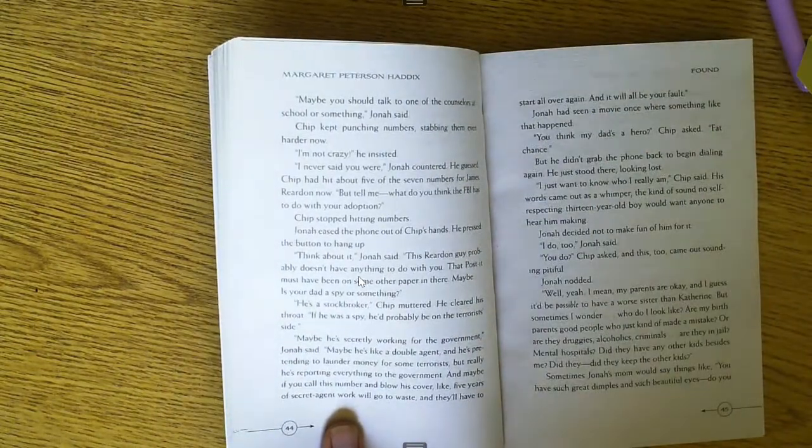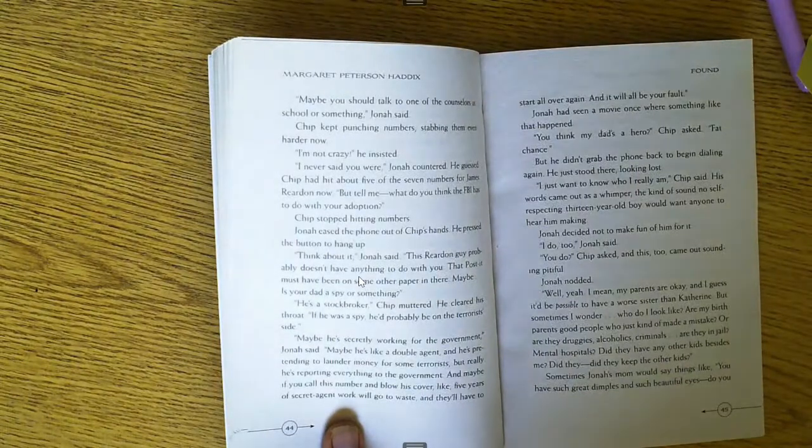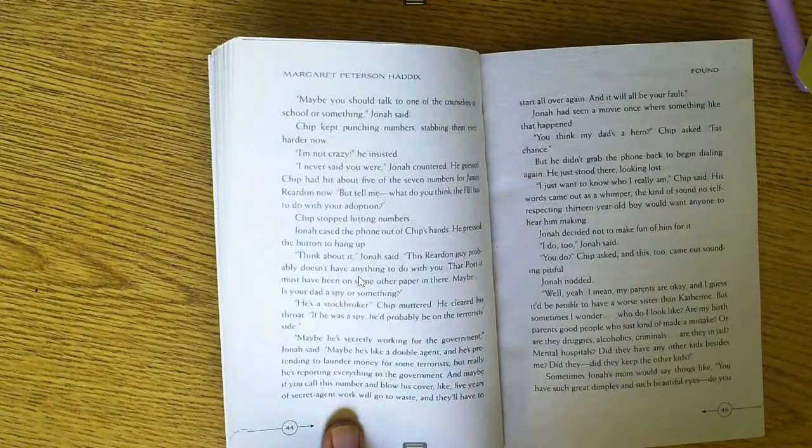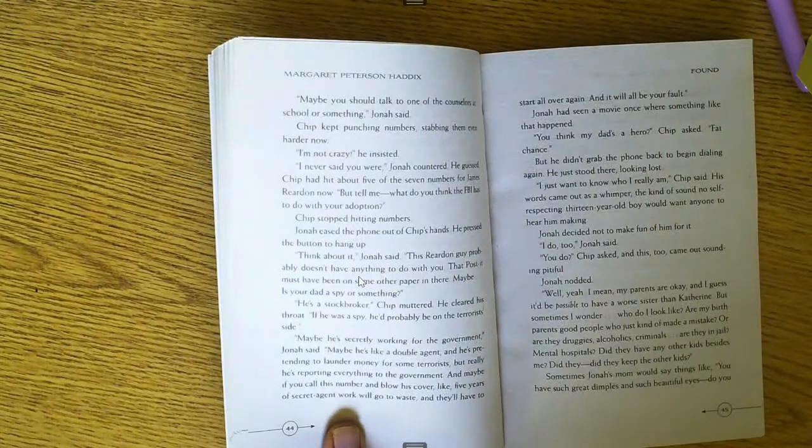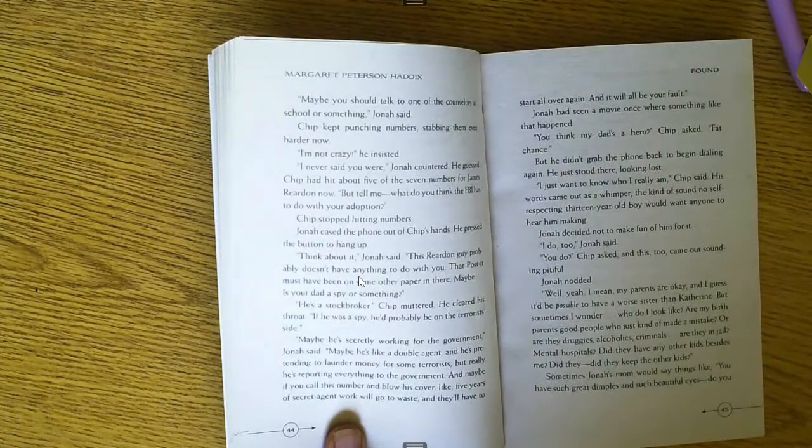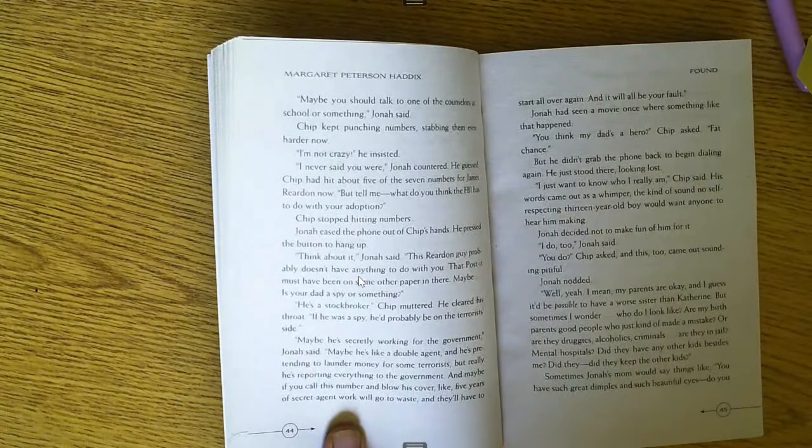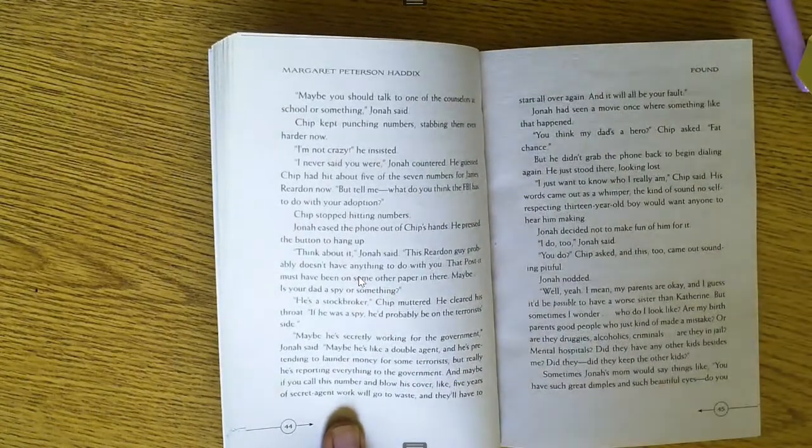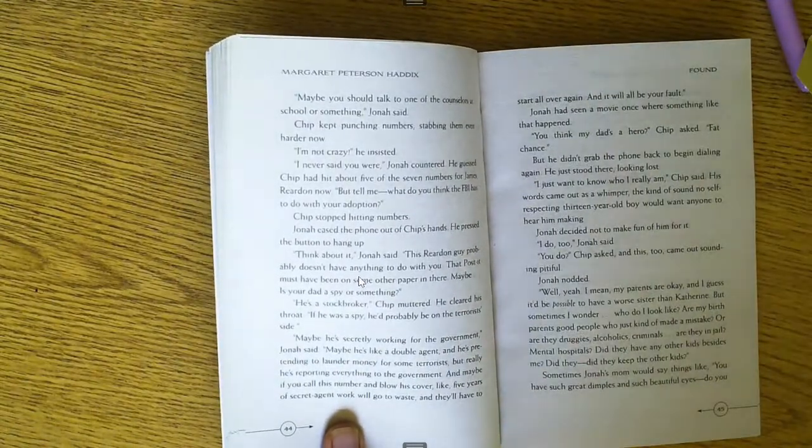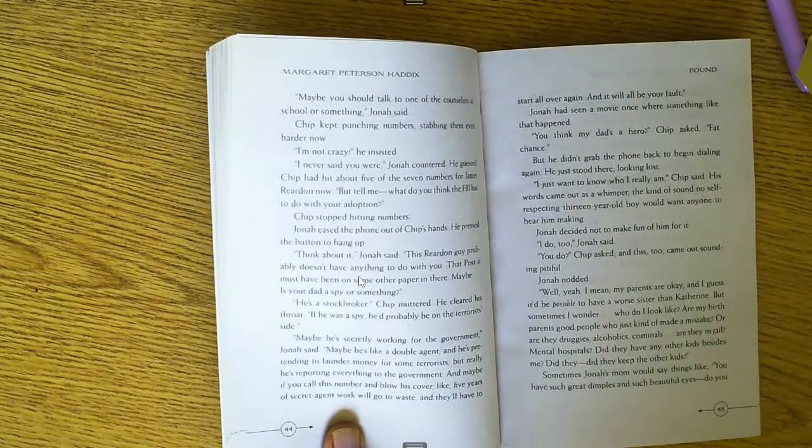Chip stopped hitting numbers. Jonah eased the phone out of Chip's hands. He pressed the button to hang up. Think about it, Jonah said. This Reardon guy probably doesn't have anything to do with you. That post-it must have been on some of the other paper in there. Maybe like your dad is a spy or something. He's a stockbroker, Chip muttered. He cleared his throat. If he was a spy, he'd probably be on the terrorist side.